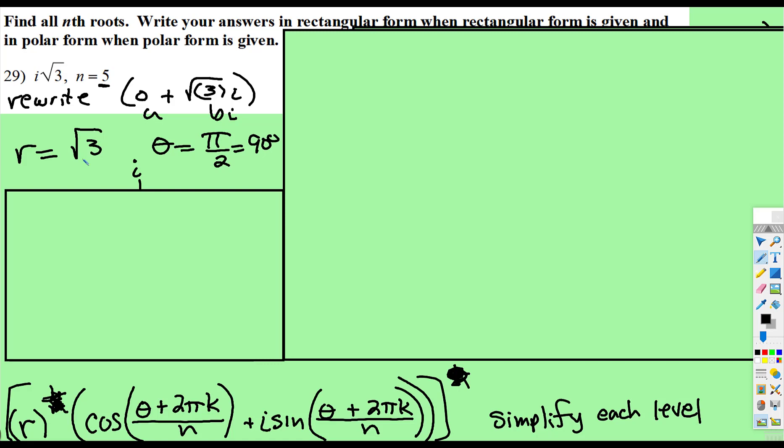Okay, so we find r by taking, remember r is the square root of a, in this case 0, plus b, which is √3 squared. Well √3 squared is just √3, √3 plus 0 is just √3. So that one is pretty easy, we know r.